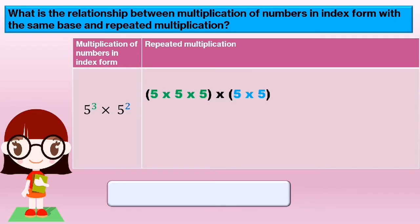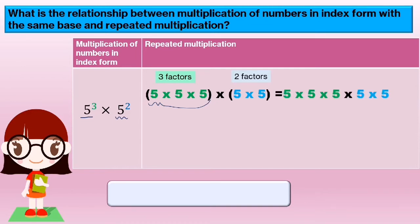We can write 5 power of 3 as 5 multiplied 3 times, times 5 power of 2 as 5 times 5. So we can write it as 5 times 5 times 5 times 5 times 5 — altogether we have 5 factors, so it equals 5 power of 5.